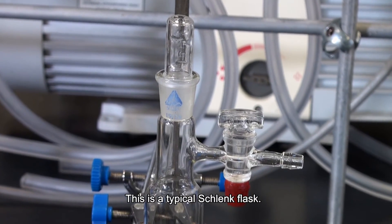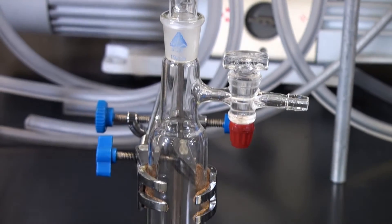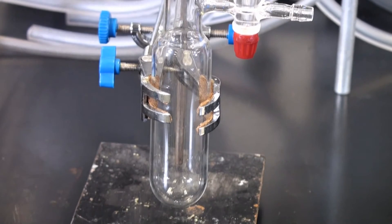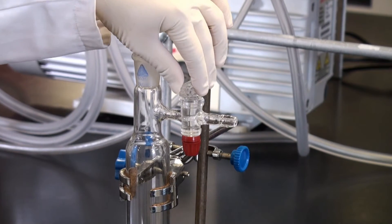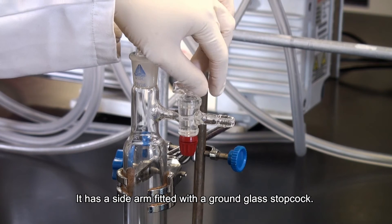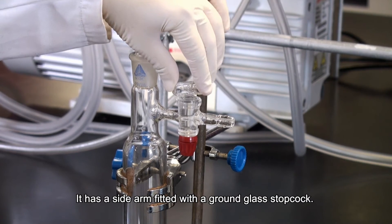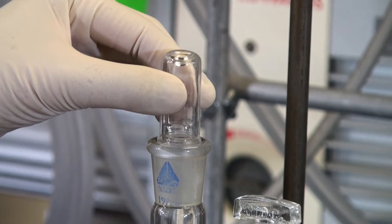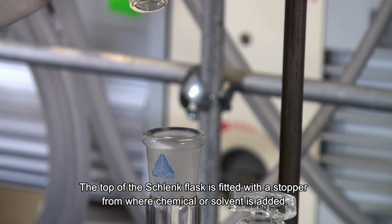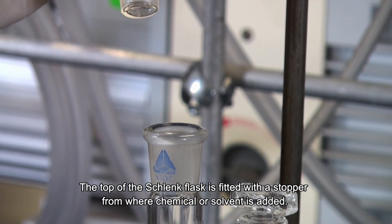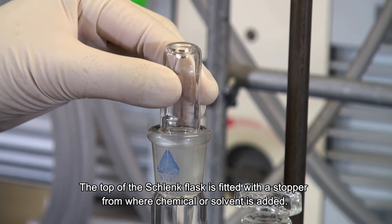This is a typical Schlenk flask. It has a sidearm fitted with a ground glass stopcock. The top of the Schlenk flask is fitted with a stopper from where chemicals or solvents are added.